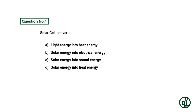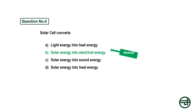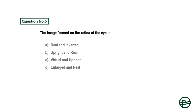Question number four: Solar cell converts — option A: light energy into heat energy, option B: solar energy into electrical energy, option C: solar energy into sound energy, option D: solar energy into heat energy. Answer is option B: solar energy into electrical energy.